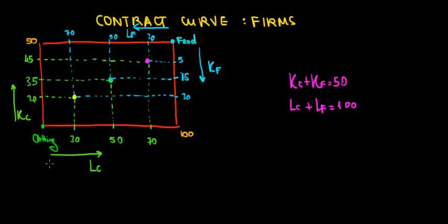Now suppose that we still have 50 units of capital in the economy and 100 units of labor. Now recall from the previous video that we have the concept of Pareto optimality.